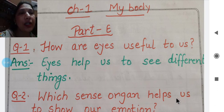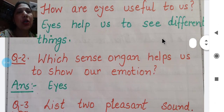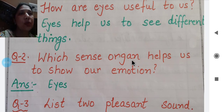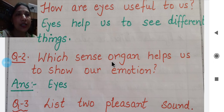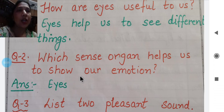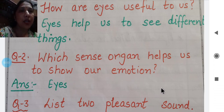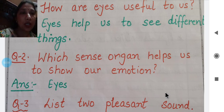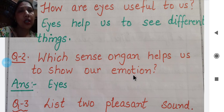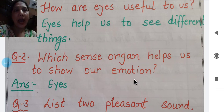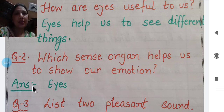Question number two: which sense organ helps us to show our emotions? We have five sense organs: eyes, ears, nose, skin, and tongue. कौन से sense organ हमारी help करता है to show our emotions - जब हम गुस्से में हों, खुश हों, या डरे हुए हों? The answer is eyes.